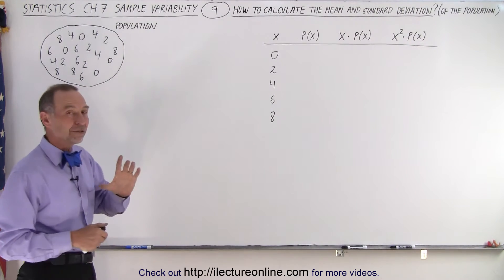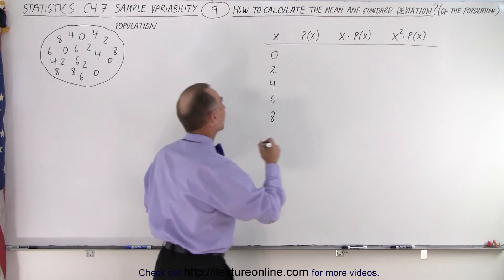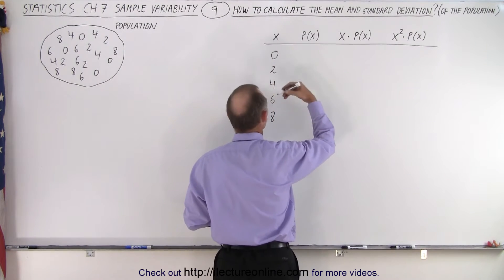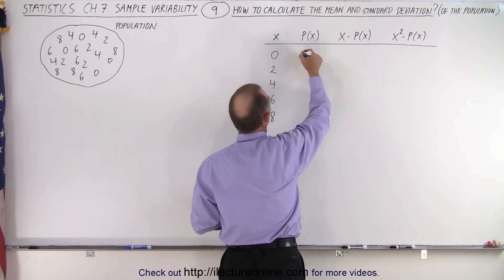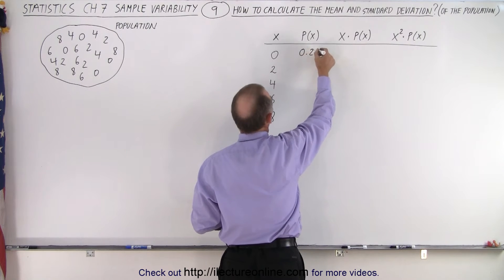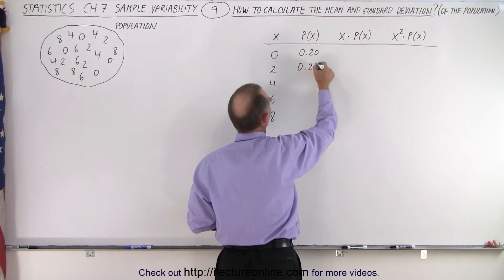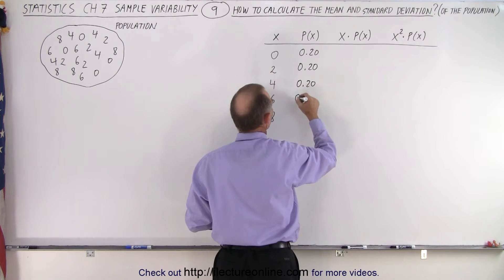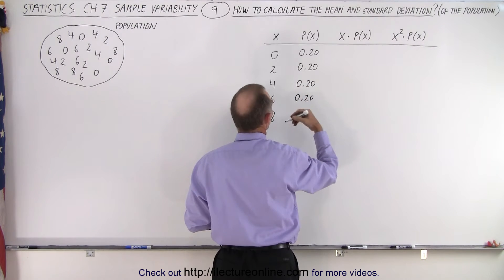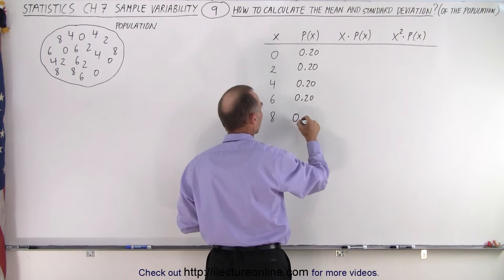So there's 1, 2, 3, 4, 5 different numbers, so the probability of getting a 0, or a 2, or a 4, or a 6, or an 8, well, that would be 0.20 for each one of them. So that's fairly straightforward. There's one-fifth possibility of getting a 0, a 2, a 4, a 6, or an 8.